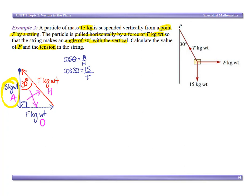Cos theta is 15 over T. T equals 15 over cos theta. Cos theta is 15 over cos 30. Now if we want it, we can answer this in exact form.